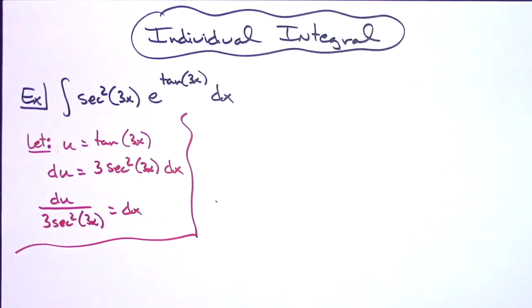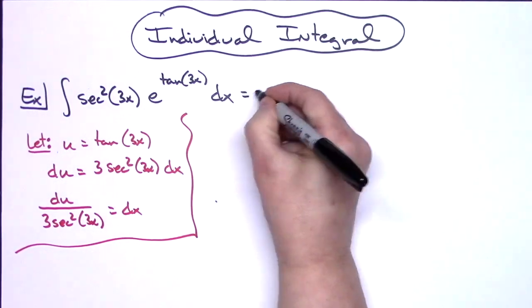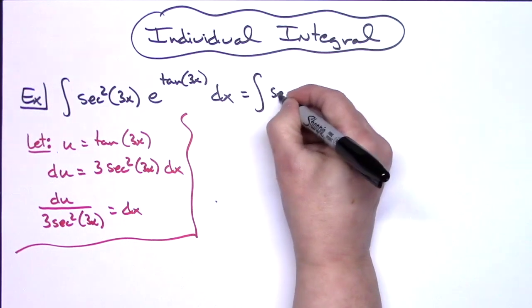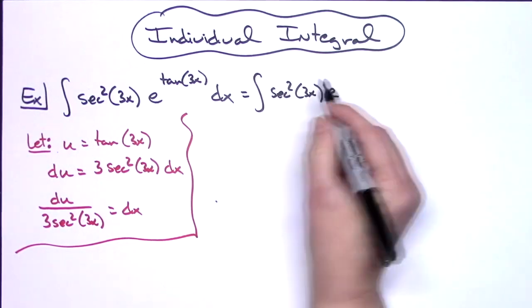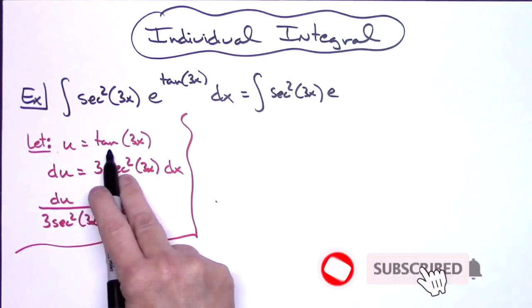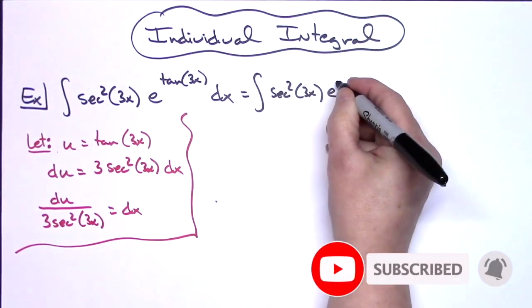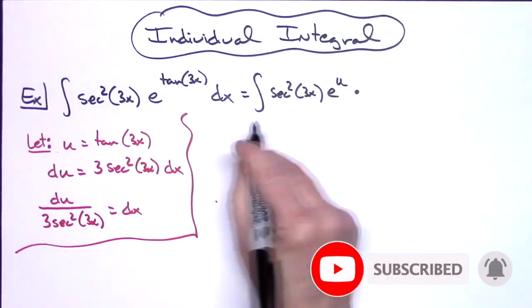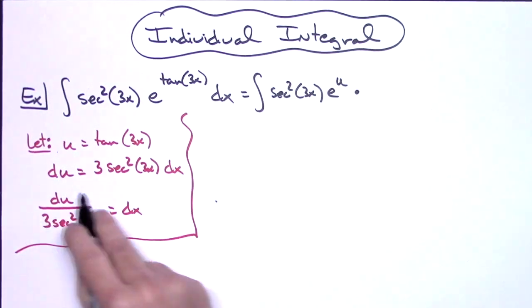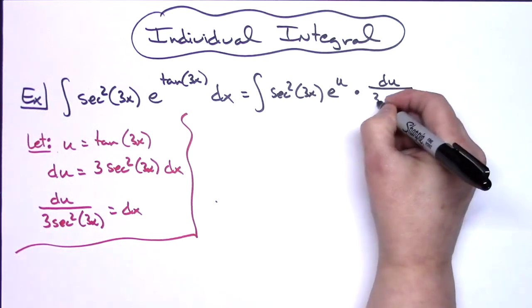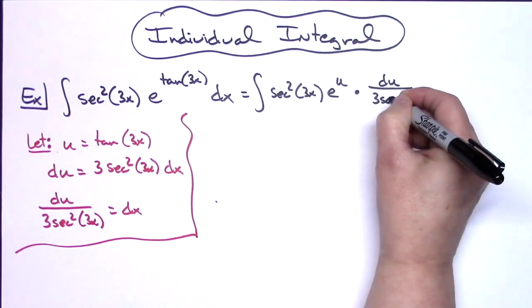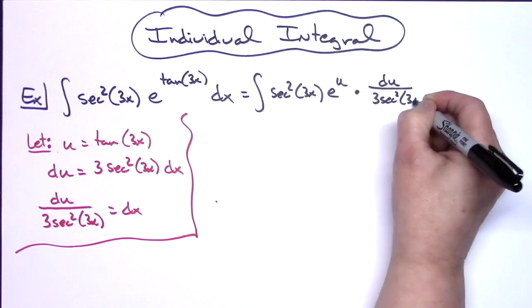So I'm going to come back up here to the original integral and start doing some substitutions. I'll still have my secant squared of 3x. I'm still going to have an e. I'm going to replace the tangent 3x there with my u, so I'll have e to the u. I'm going to replace that dx with what it equals, which will be the du over 3 secant squared of 3x.